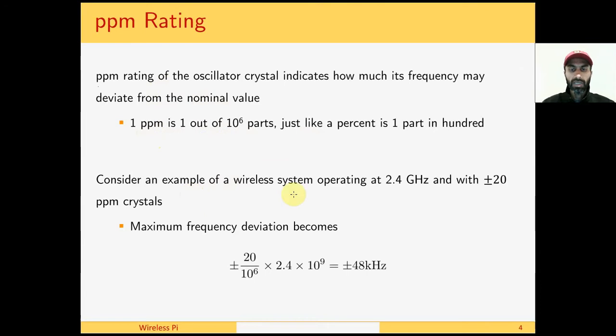So for example if we take a wireless system operating at 2.4 gigahertz which is plus minus 48 kilohertz. If the transmitter is at one extreme and the receiver is at the other extreme, the total frequency difference can be 96 kilohertz which is a significant value.